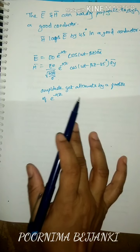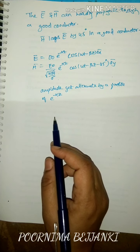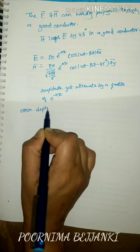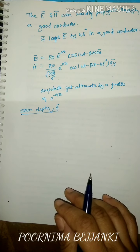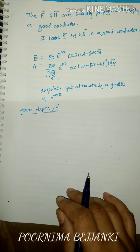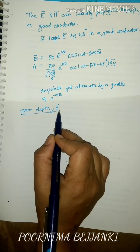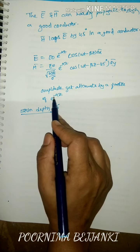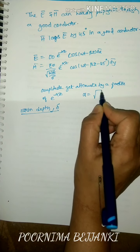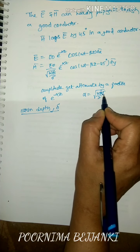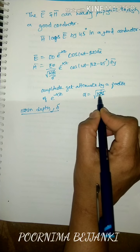Since the electromagnetic wave can hardly propagate through a good conductor, we define a quantity called skin depth to measure how much depth the electromagnetic wave can penetrate through any given medium. Skin depth is represented by delta. The skin depth will be very small for a conductor because the wave is drastically attenuated by e^(−alpha z), and alpha equals root of omega mu sigma over 2. As the conductivity of the material and frequency increase, alpha increases and the wave penetrates less.